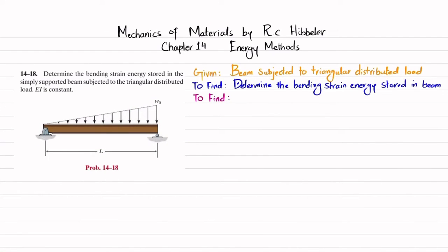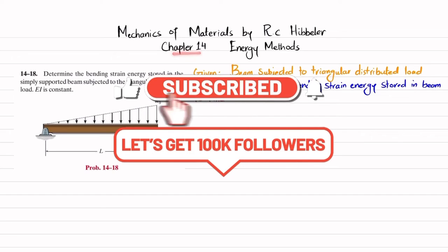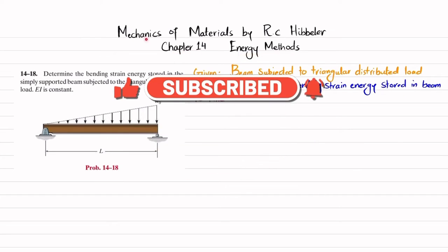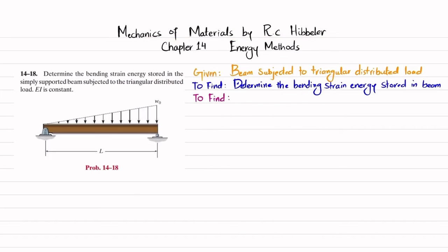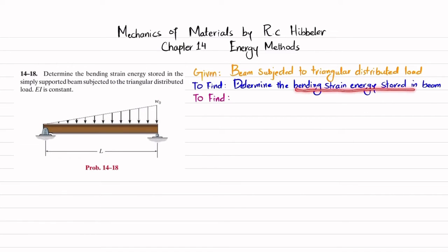Welcome back. In this video we are going to solve problem 14-18, taken from chapter 14, Energy Methods, from the book Mechanics of Materials by R.C. Hibbeler. The statement is: determine the bending strain energy stored in the simply supported beam subjected to a triangular distributed load. EI is constant. The beam has triangular distributed load with magnitude w₀ at one end and zero at the other.